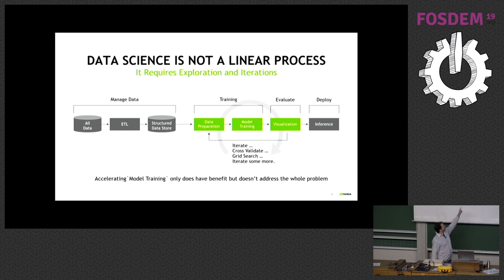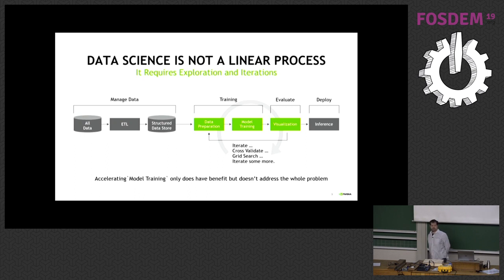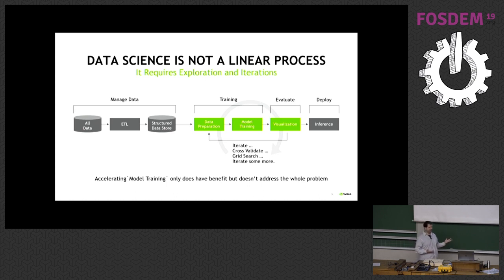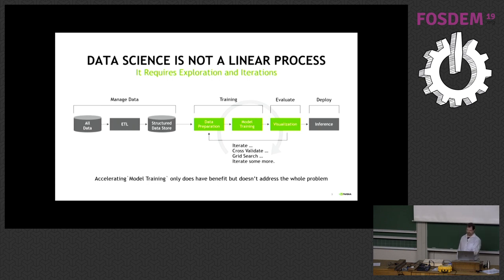If you look at the green boxes — data preparation, model training, and visualization — the training of the model and later the inference or predicting of outcomes is a big piece in this circle, but it's not everything. So if you reduce the size of the model training block, that's helpful, but it doesn't get you all the way, because the data preparation can be very significant.